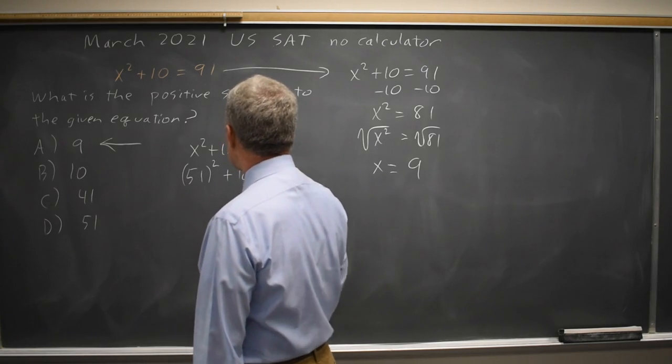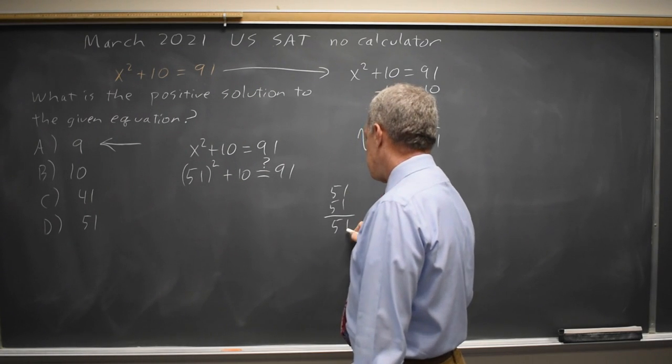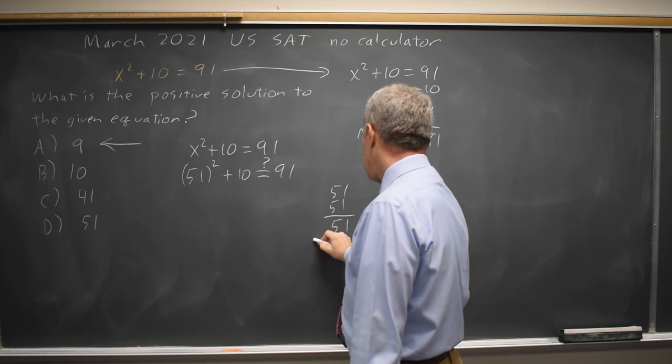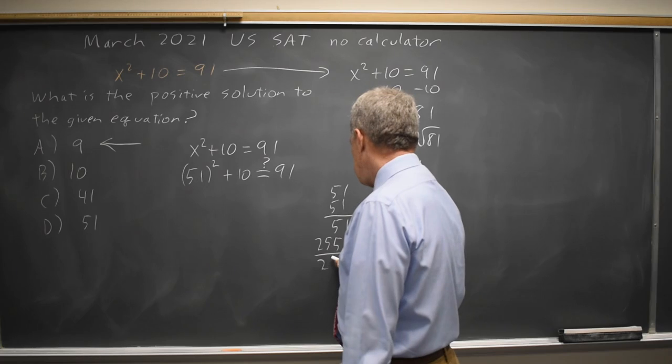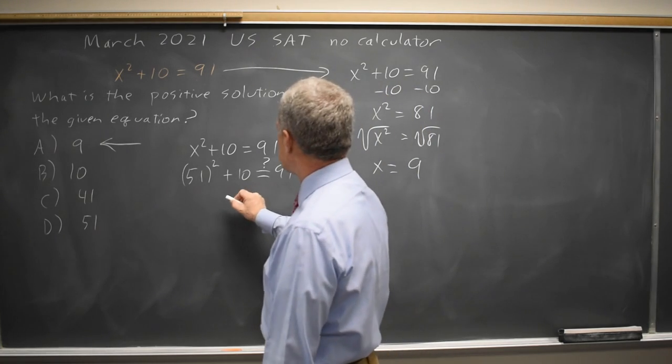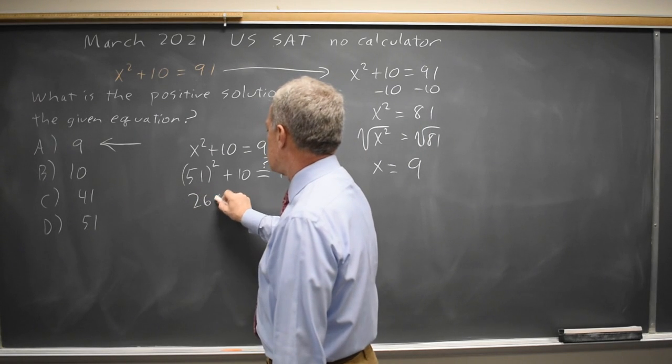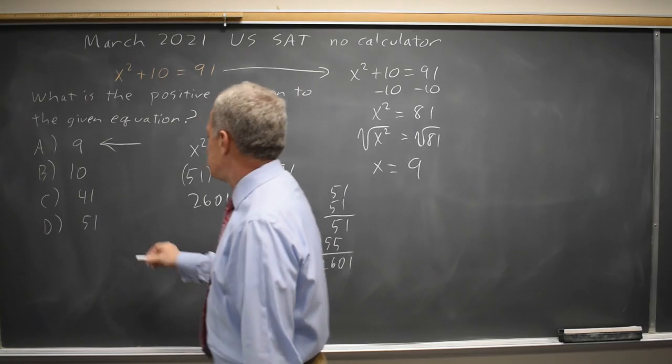is this equal to 91? Well, 51²=2601 and 2601+10 is not equal to 91, so choice D is not correct.